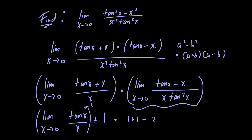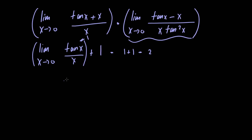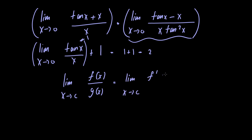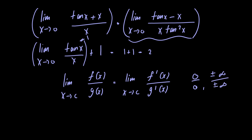For the second limit we'll need to apply L'Hôpital's Rule. L'Hôpital's Rule states that if you have a limit as x approaches some value c of f(x) divided by g(x), then this limit equals the limit as x approaches c of the derivative of f(x) divided by the derivative of g(x), given that f and g are both differentiable at c and the limit is of indeterminate form 0 over 0 or ±∞ over ±∞. You can apply this rule indefinitely as long as the criteria are satisfied.